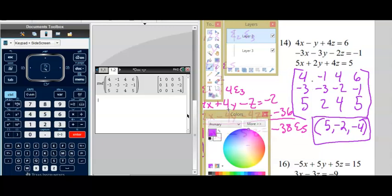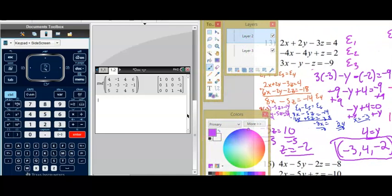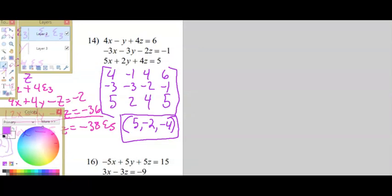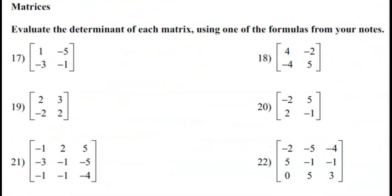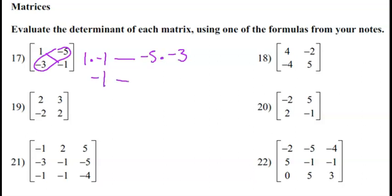If you are in one of the advanced courses, I do expect you to do substitution and elimination. For the matrix problems, evaluate the determinant of each matrix using the formulas from your notes. The formula for a 2-by-2 determinant is to multiply the main diagonal together — 1 times negative 1 — and then subtract the product of the other diagonal: negative 5 times negative 3. So we have negative 1 minus 15, which equals negative 16. That is your determinant.